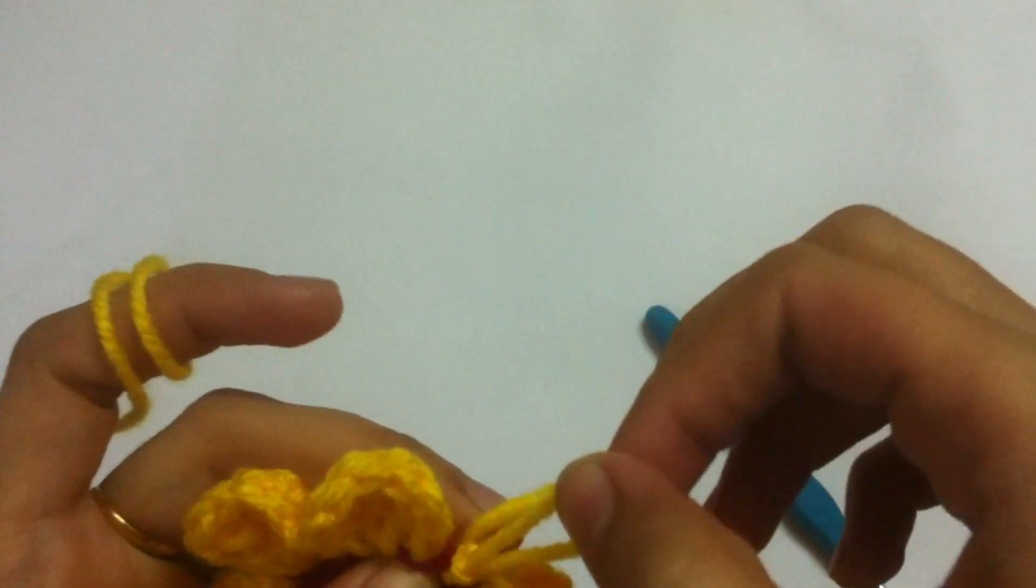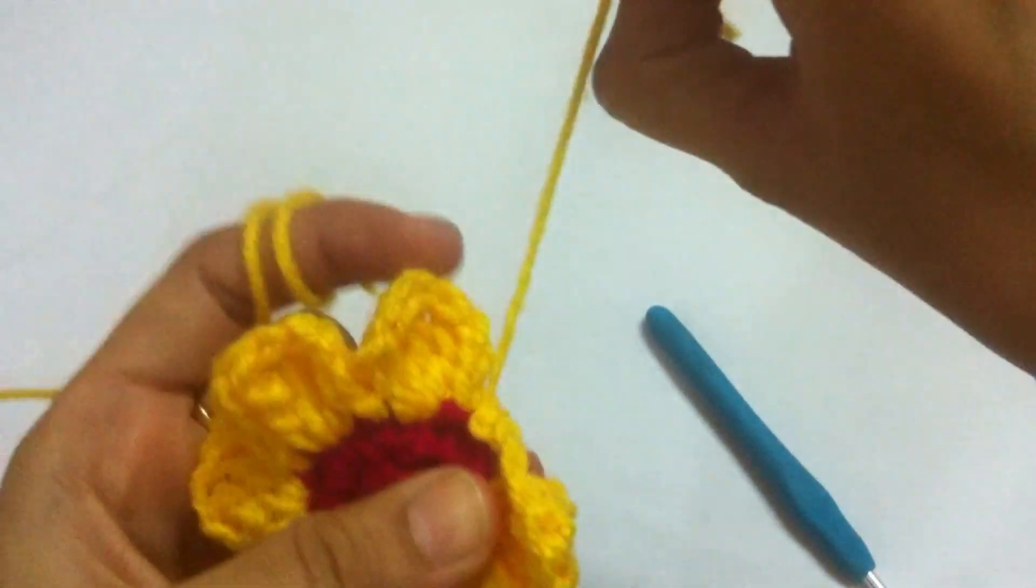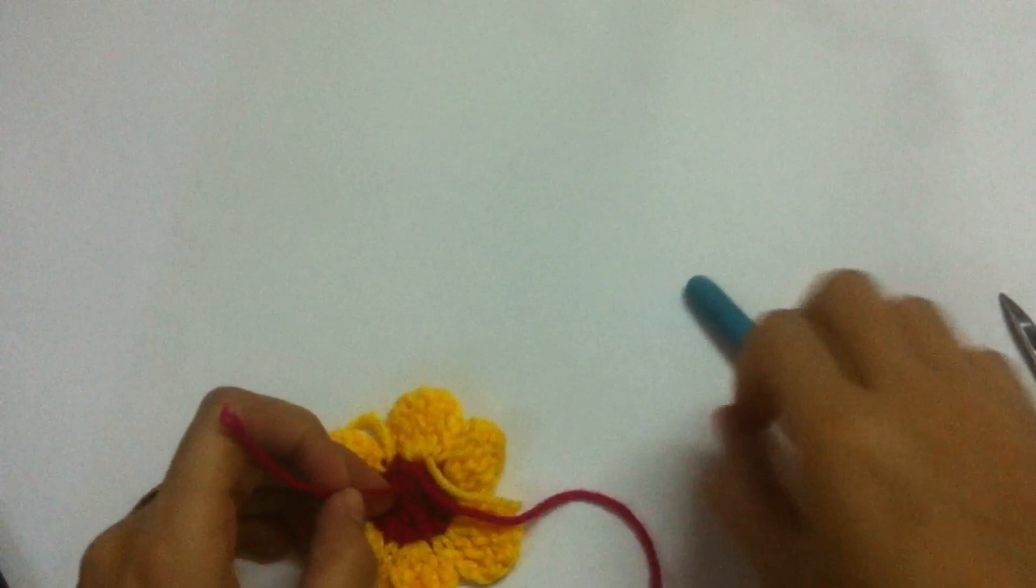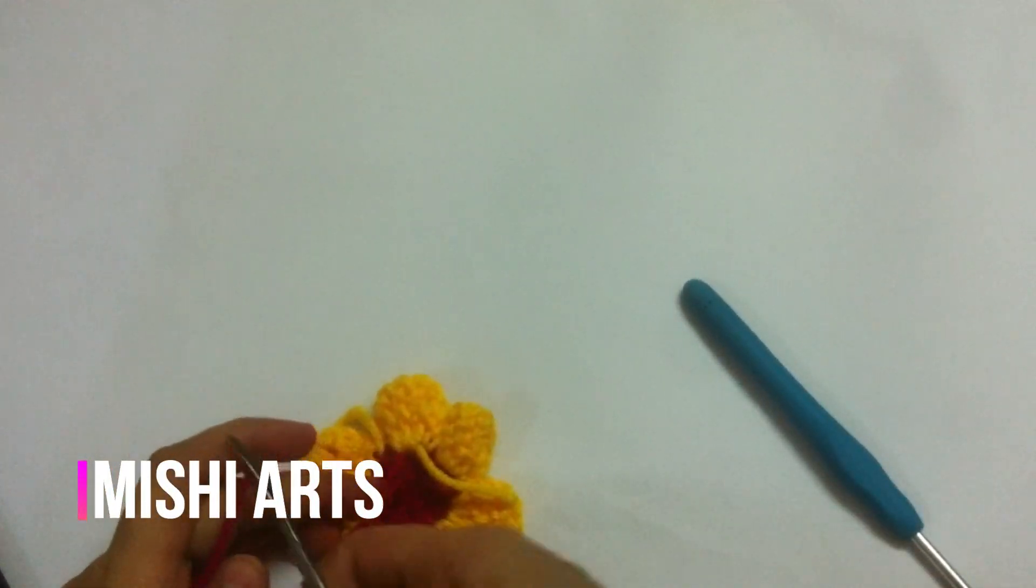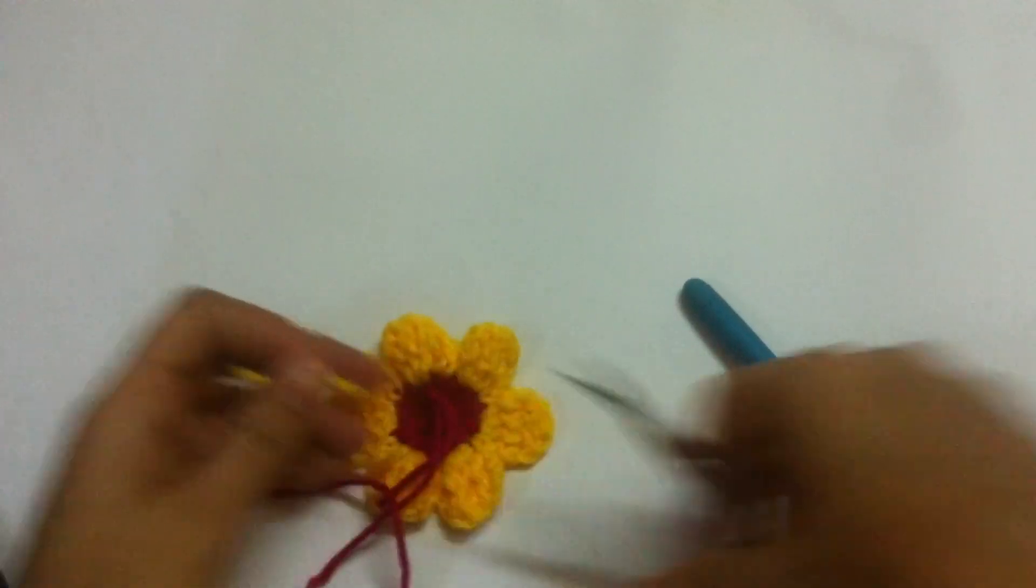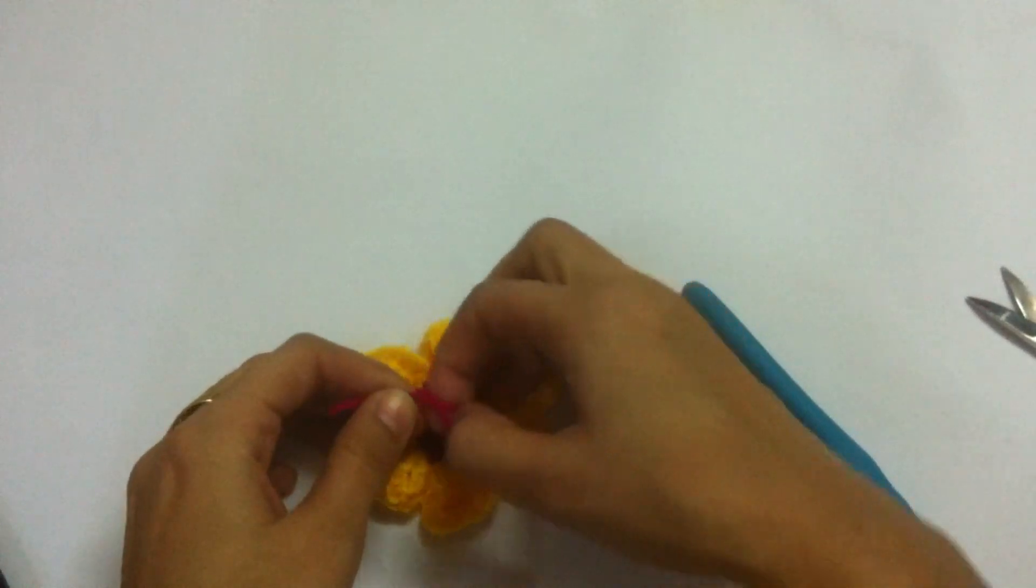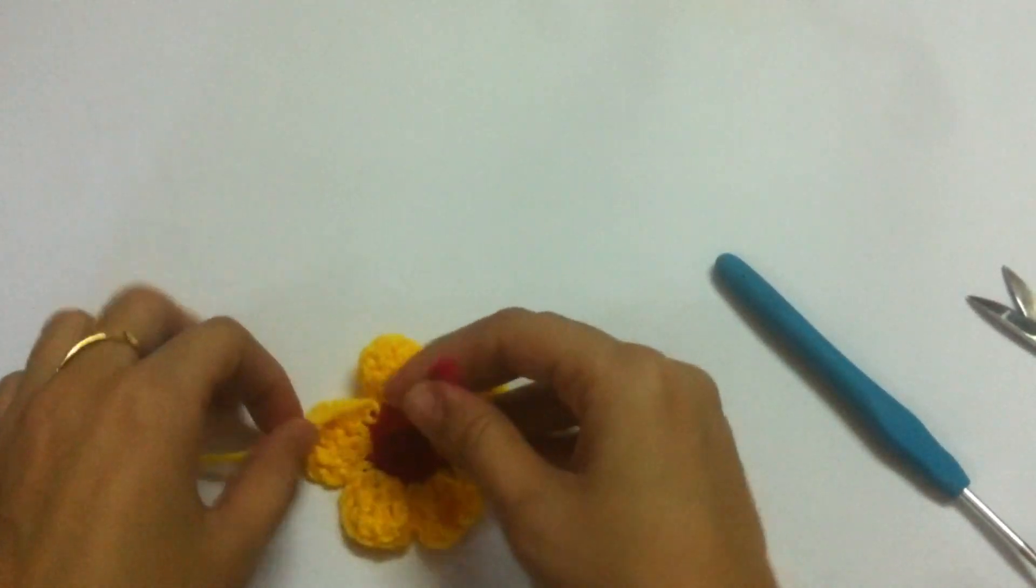You simply have to cut your yarn and fasten off. Now for the finishing look, we have to tie to your magic circle and you have to cut this extra yarn. I have to cut this extra yellow yarn. Tie a knot so that it secures.